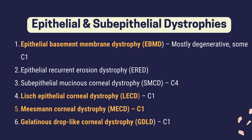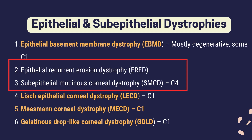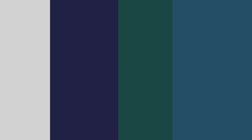A quick update: the epithelial recurrent erosion dystrophy is no longer considered a separate entity in the latest IC3D classification. It now falls under the epithelial basement membrane dystrophy. Also, subepithelial mucinous corneal dystrophy has been moved — it is now in category 4 according to the most recent changes. Keep that correction in mind.